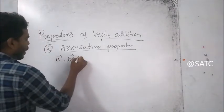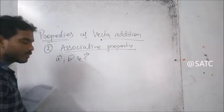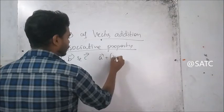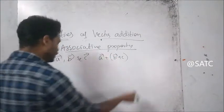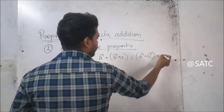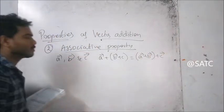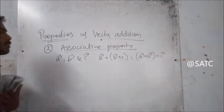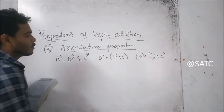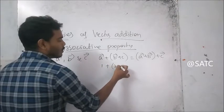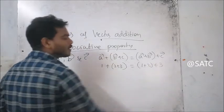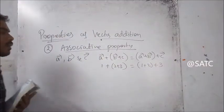A, B and C are three vectors, then A plus B plus C equal to A vector plus B vector plus C. For example, one plus two plus three — they add in any grouping. Okay.